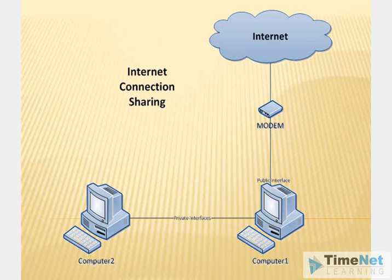In a typical scenario, the first computer's public interface or ethernet card is connected to the internet through a modem, and the second ethernet card is connected to another computer. So this internet connection on the public interface will be shared to the second computer through the private interface. Let's see how we can do this on a Windows 7 computer.